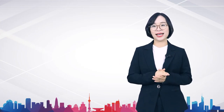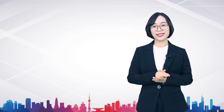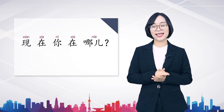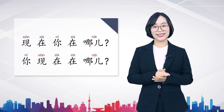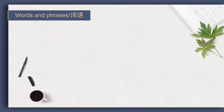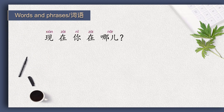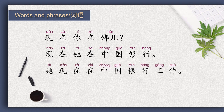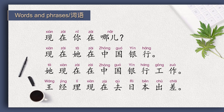Please keep in mind that in Chinese, time words which indicate the occurrence of actions can be placed before or after the subject. For example, we can say 现在你在哪儿？ or 你现在在哪儿？ OK, please read with me. 现在你在哪儿？ 现在他在中国银行。 他现在在中国银行工作。 王经理现在去日本出差。